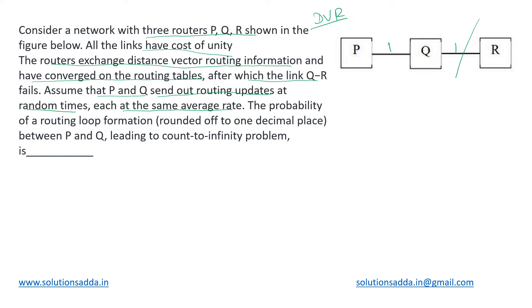Suddenly the link QR fails. After the break, P and Q are left in the network. They will send out their routing updates to each other at random times but at the same average rate. This gives rise to two different scenarios: if P sends first to Q, or if Q sends first to P. We need to find the probability of a routing loop formation — whether the count-to-infinity problem will occur.